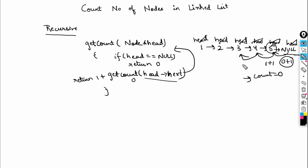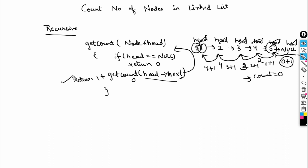So node five adds one to zero and returns one to node four. Node four adds one and returns two to node three. Node three adds one and returns three to node two. Node two adds one and returns four to node one. Node one adds one and returns five — which is the total count. And five is returned as our final answer.